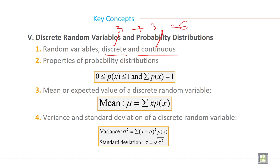Property of probability distributions: zero is less than or equal to probability of X and less than or equal to one. And summation of probability of X is equal to one.